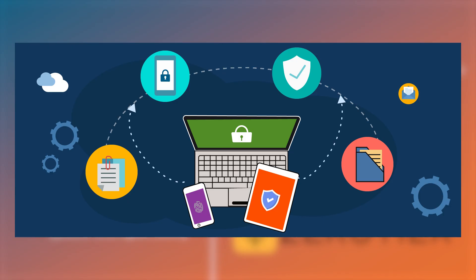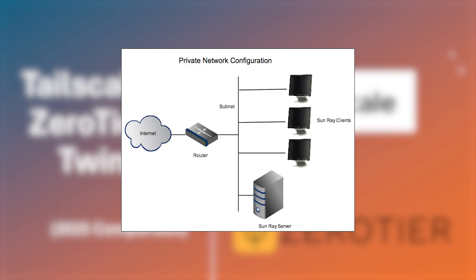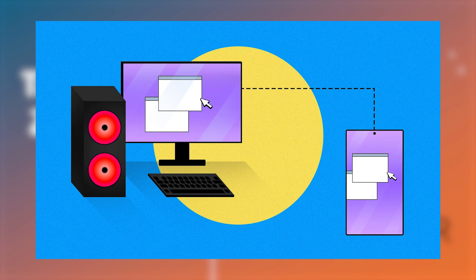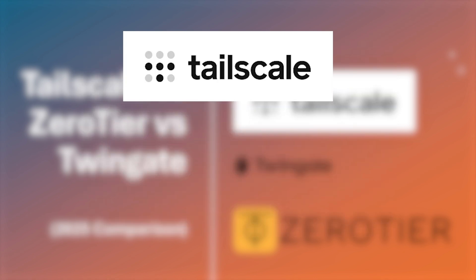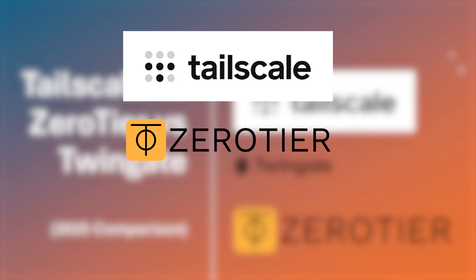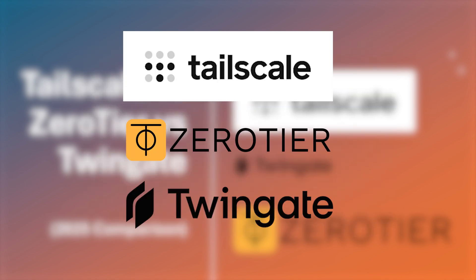Whether you need to securely access company resources, set up a private network, or connect remote devices without the complexity of a traditional VPN, solutions like TailScale, ZeroTier, and Twingate have gained popularity.